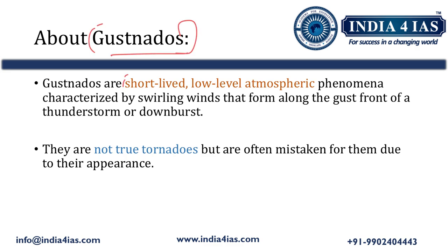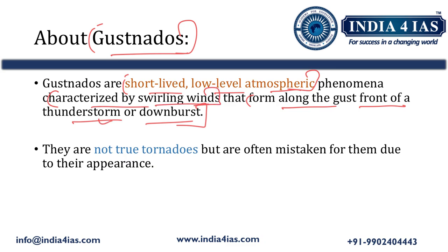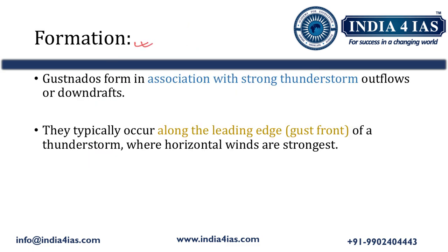Gustanados are short-lived, low-level atmospheric phenomena. They are restricted to a few hundred meters within the troposphere. They form along the gust front of a thunderstorm or downburst and are characterized by swirling winds. They are not true tornadoes, but in appearance they look like tornadoes.